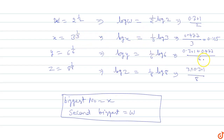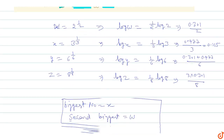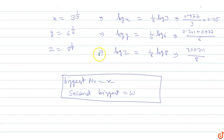So ranking w, x, y, and z: the biggest number is x and the second biggest is w. That is the answer for this question.